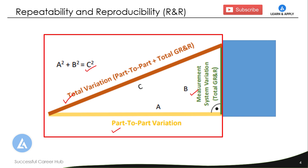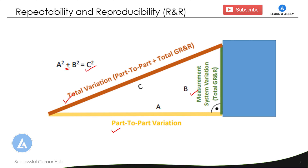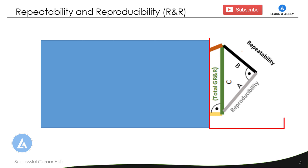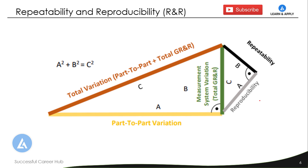This is similar to the Pythagorean theorem — the diagonal squared equals the sum of the squares of the adjacent sides. This is also applicable for measurement system variation. Measurement system variation consists of two important parts: variation due to the equipment and variation due to the operator. If we add the variances of these two, we get the total gauge R&R. The additive property of variances makes understanding MSA much simpler, allowing us to understand the relationship between all components with the help of a simple diagram.